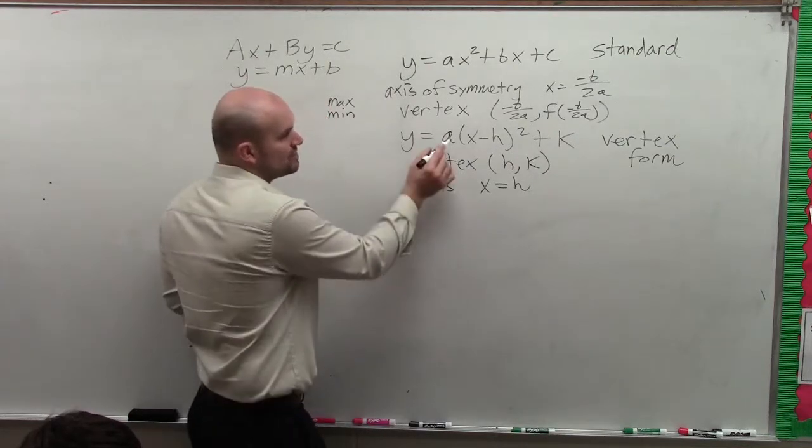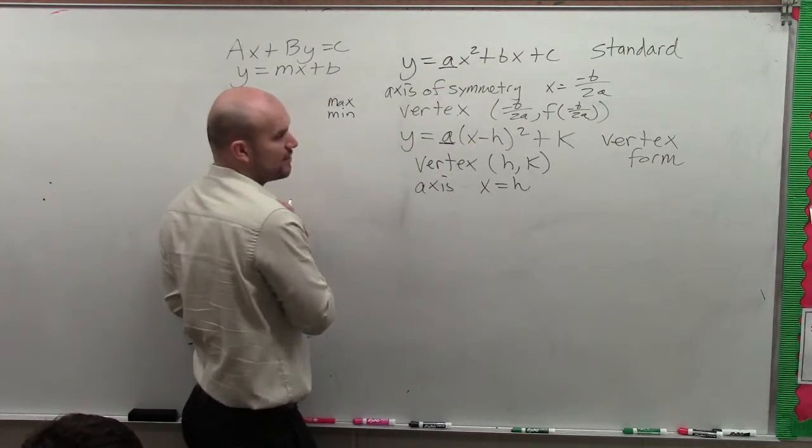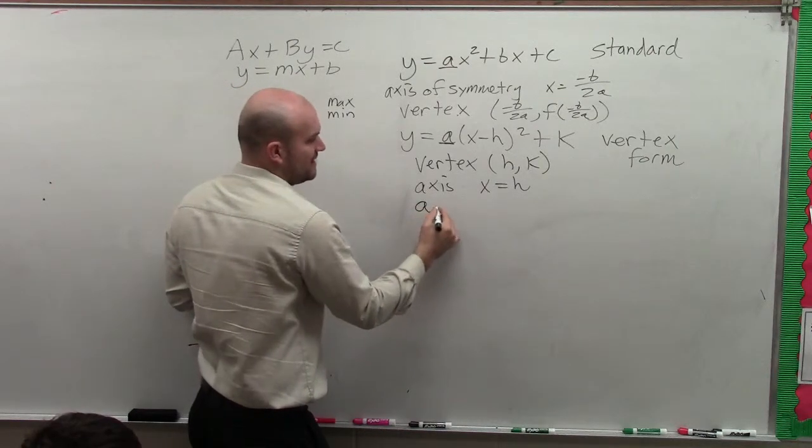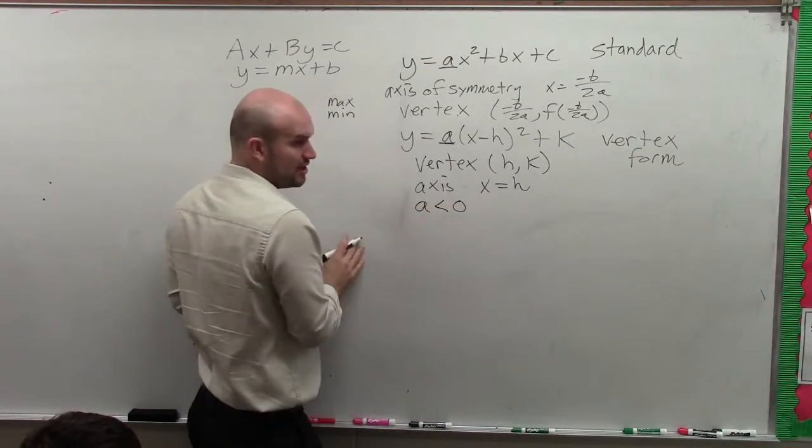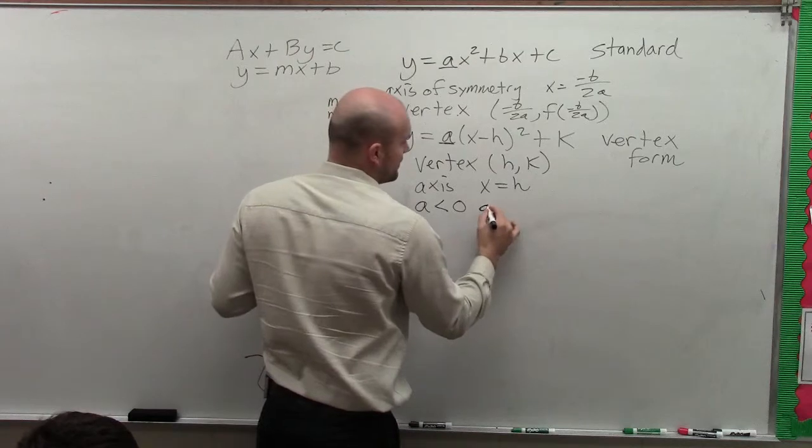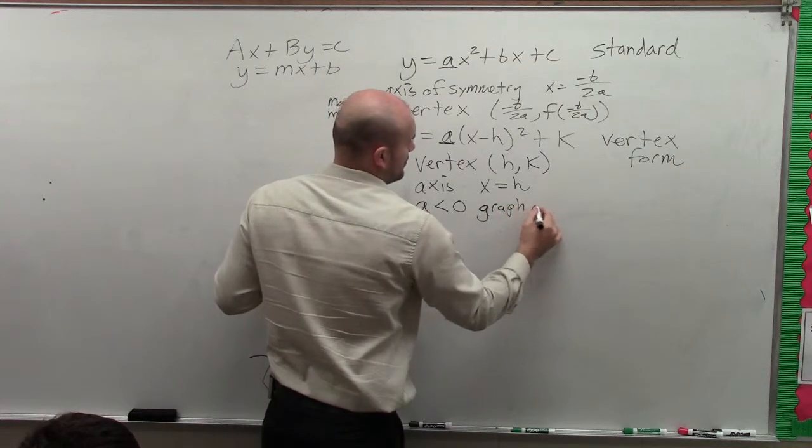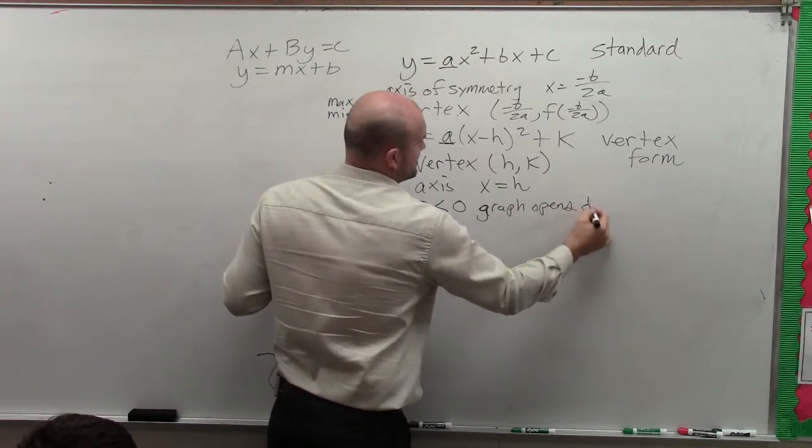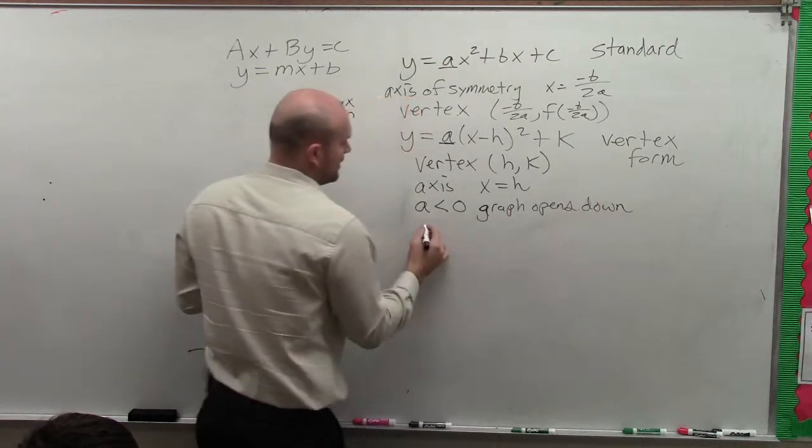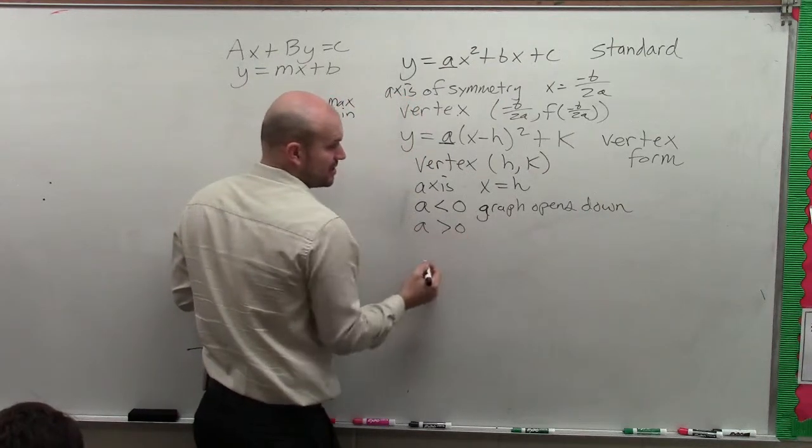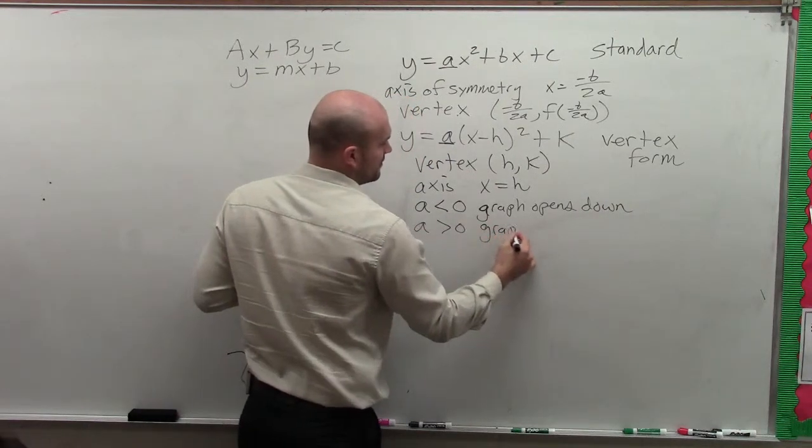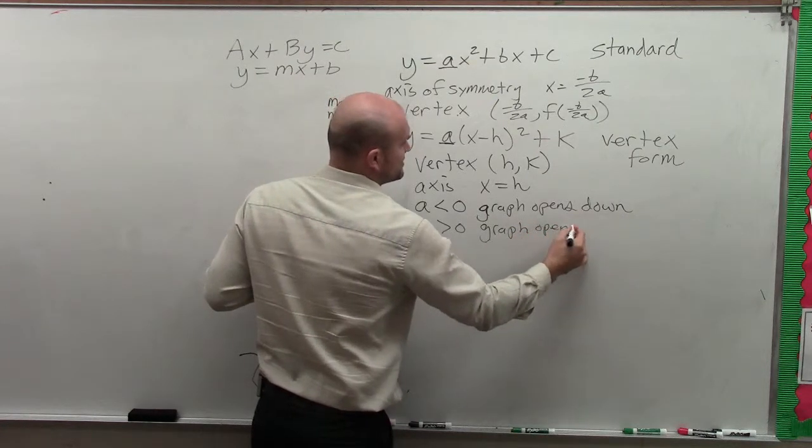Well, there actually is a rule which actually works for vertex form and for standard form. And that rule is if a is less than 0, then the graph opens down. And if a is greater than 0, then the graph opens up.